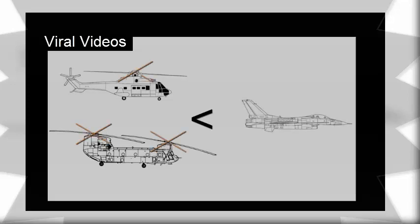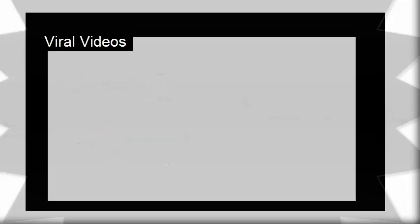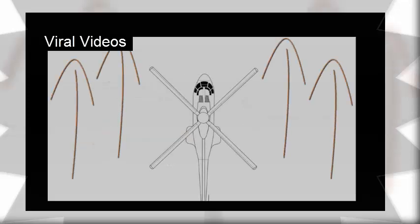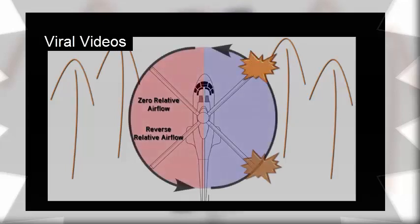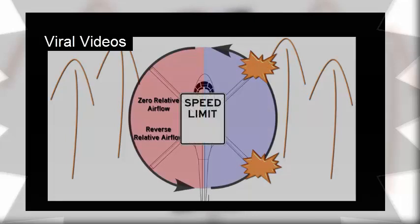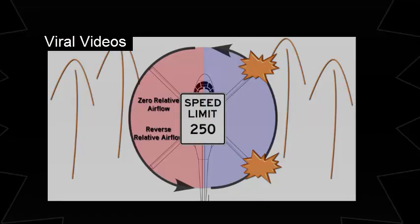The helicopter rotor is inherently flawed in regards to speed. If a helicopter travels too fast, areas of the retreating blade will slow enough to experience zero or even reverse relative airflow. At the same time, the tip of the advancing blade will approach a fast enough speed that shock waves can form. Because of these limiting factors, the maximum forward speed a helicopter can theoretically achieve is about 250 miles an hour.